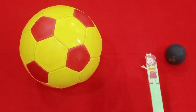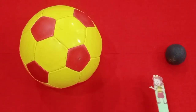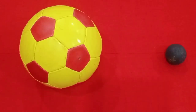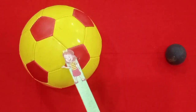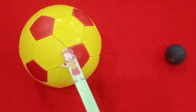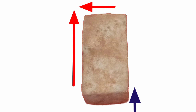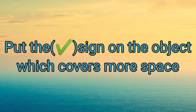Now we have a football and a ball. We have to see which of these objects covers more space. The football is very big in size; its height is also more than the ball. So the football covers more space. The object with longer length and breadth and more height covers more space.